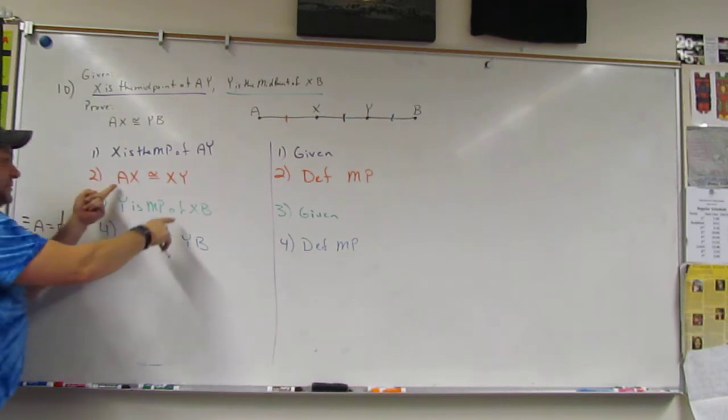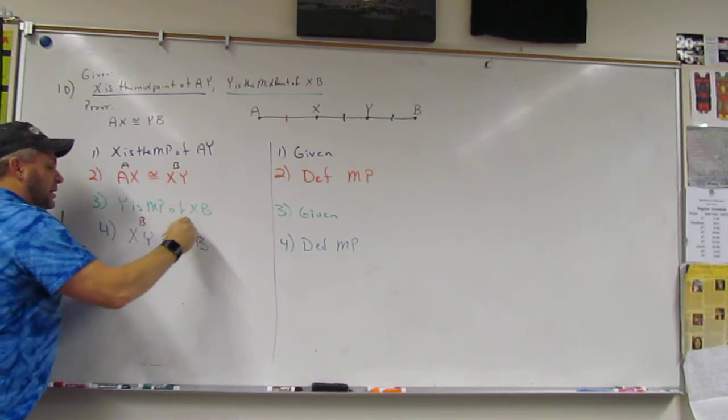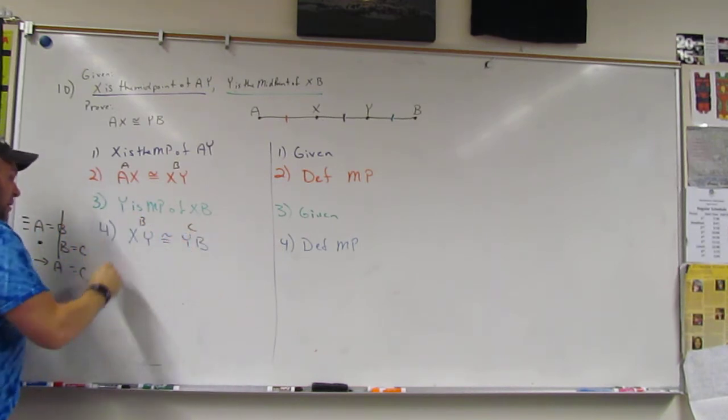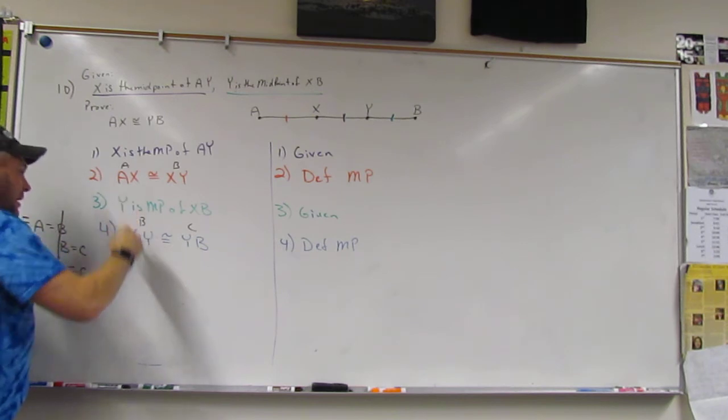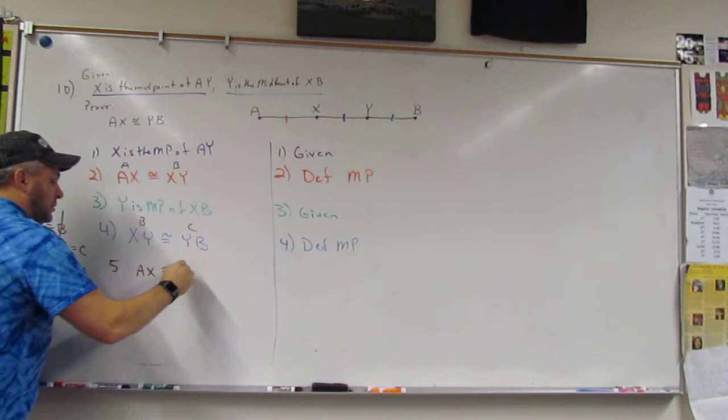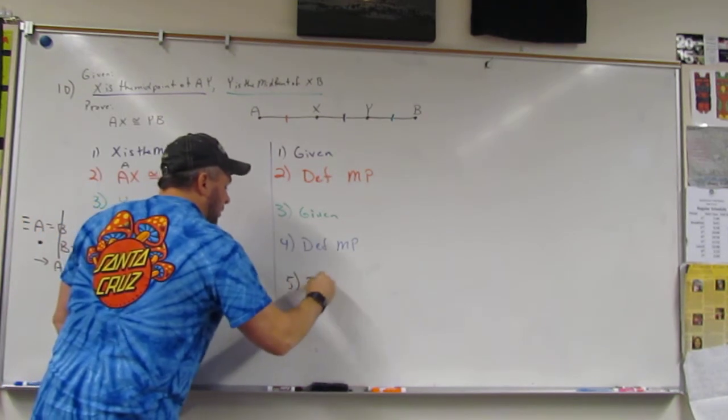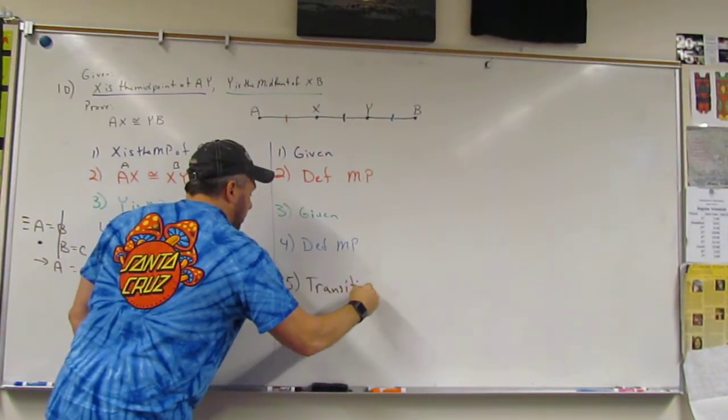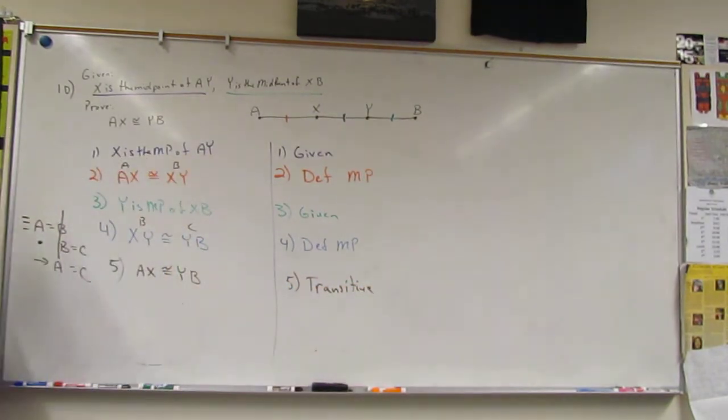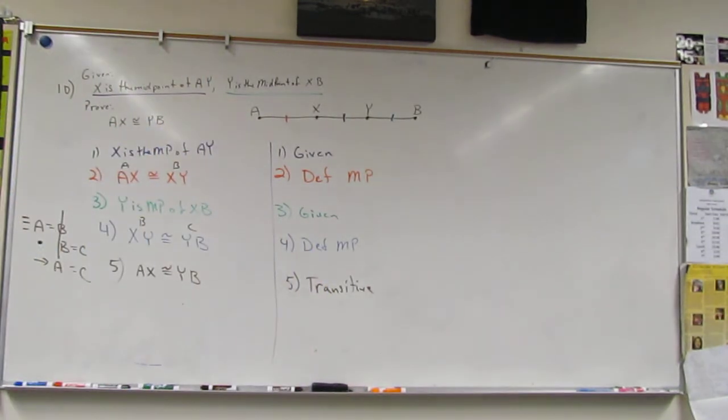Is that what we're doing here? Yeah. If A is B and B is C, then what? Then A equals C. And what did we call that rule? The transitive property. Transitive. Okay? Cool. Then that's what we do. All right. Drop the mic. See ya.